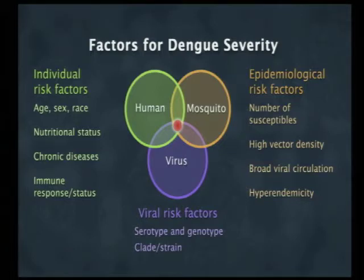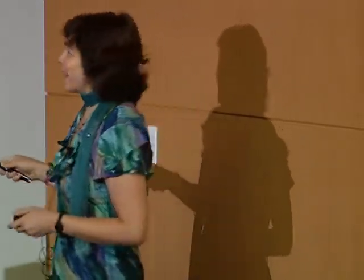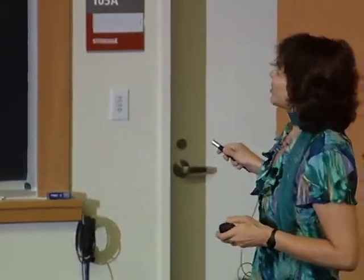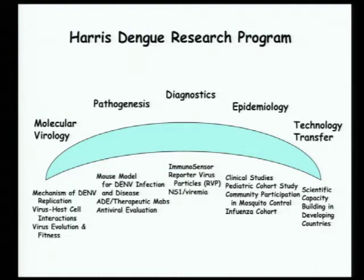We have four different virus strains leading to individual risk factors but also what we call epidemiological risk factors, which have to do with the population-level immunity to different serotypes. Not only does it matter which serotype is circulating, but which serotype is followed by which can make a difference. Within each serotype there are genotypes and clades that can also make a difference. Essentially the 'red dot' is the perfect storm which is when you get severe disease, and what we've been trying to do in our lab is pull apart the human, the virus, and the mosquito.